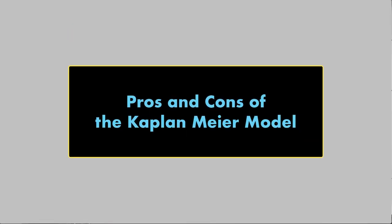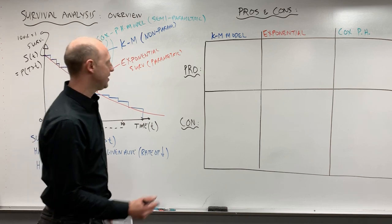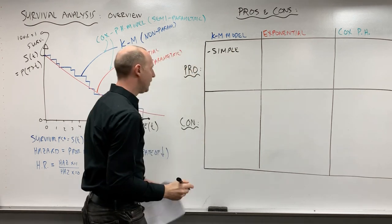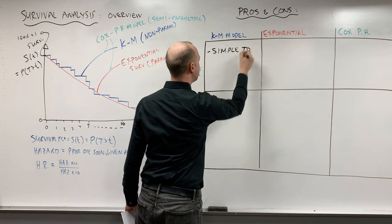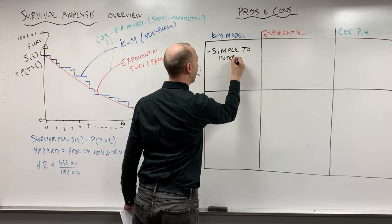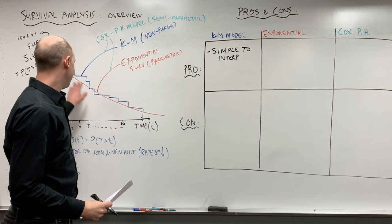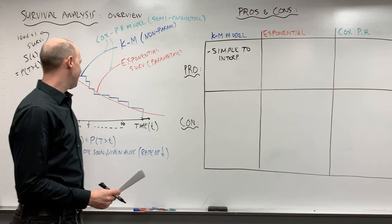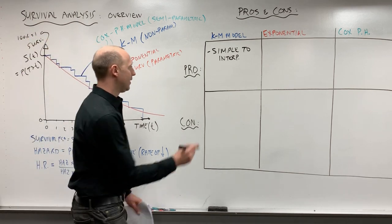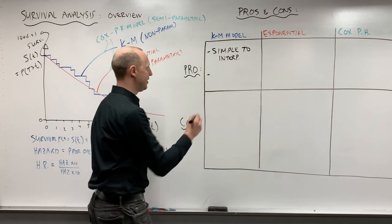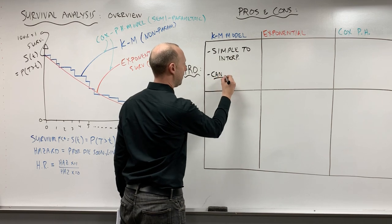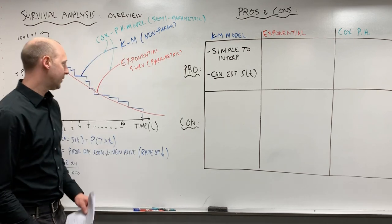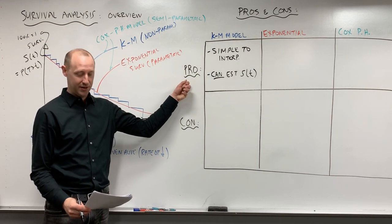First, the idea of the Kaplan-Meier model. One of the pros or nice things about it is it's simple to interpret. Most people when they learn the Kaplan-Meier model understand what it is - it's fairly intuitive and easy to look at and understand. Another nice thing is that you can estimate the survival, the probability of surviving beyond a certain time point.